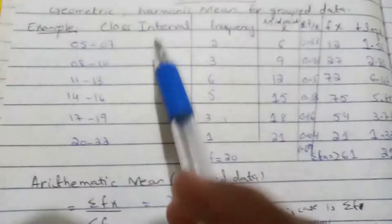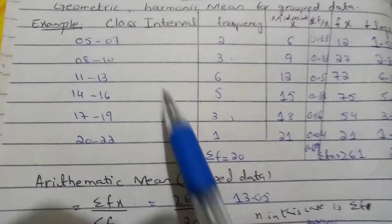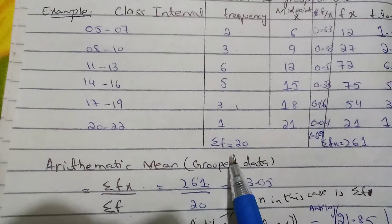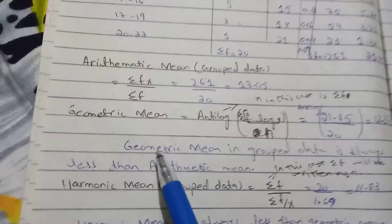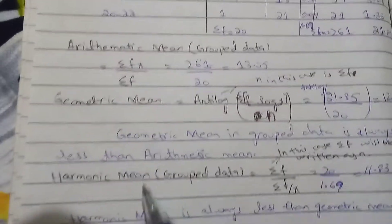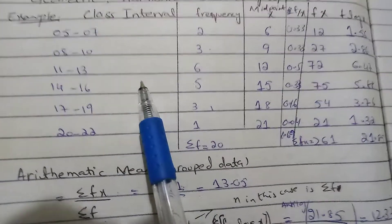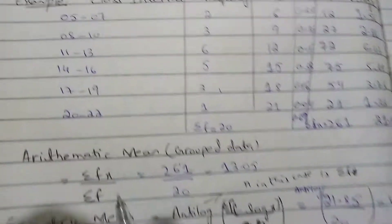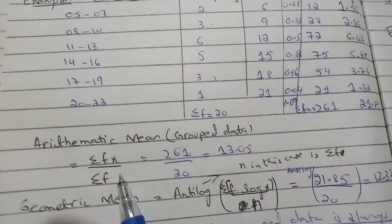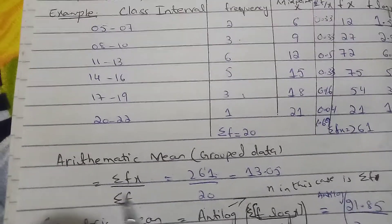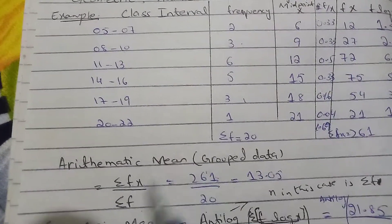In today's lecture, we are going to learn about how to calculate arithmetic mean, geometric mean, and harmonic mean for grouped data. So let's begin. If we have to calculate arithmetic mean, we have the formula: summation fx divided by summation f.